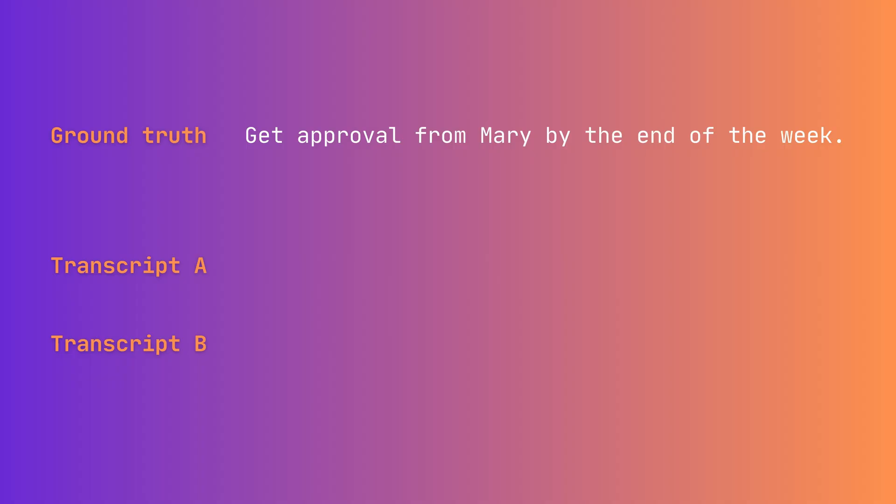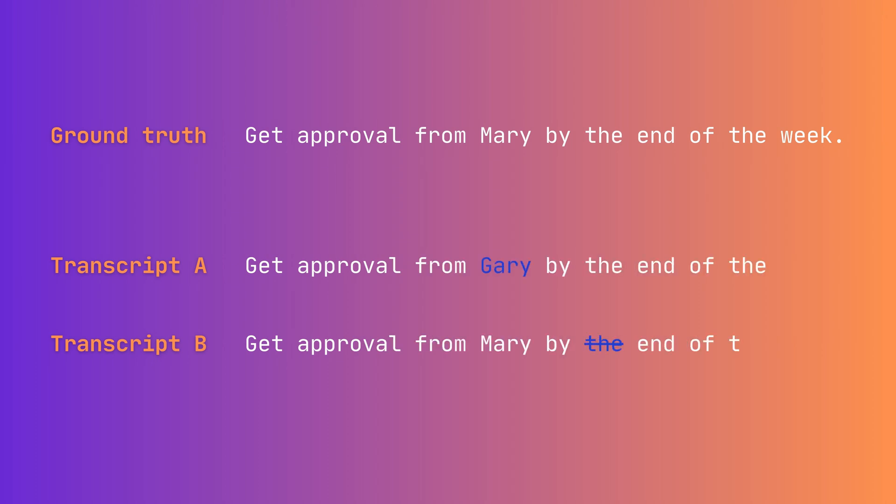Word error rate is the default way to evaluate automatic speech recognition models, but it doesn't always capture the nuance of real-world use cases. That's why for Conformer 2, we also focused on alphanumerics recognition and proper noun recognition. Word error rate counts only the number of errors, not the significance of these errors. So given these two example transcripts, both would have the same word error rate, even though transcript B would be highly preferable to transcript A.